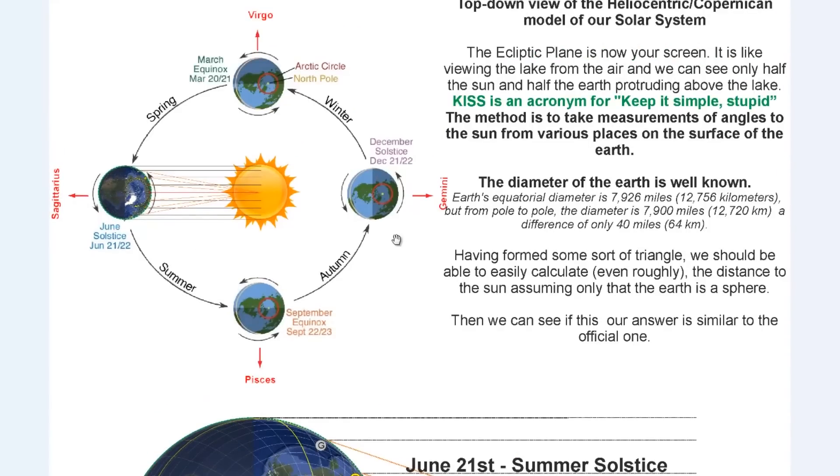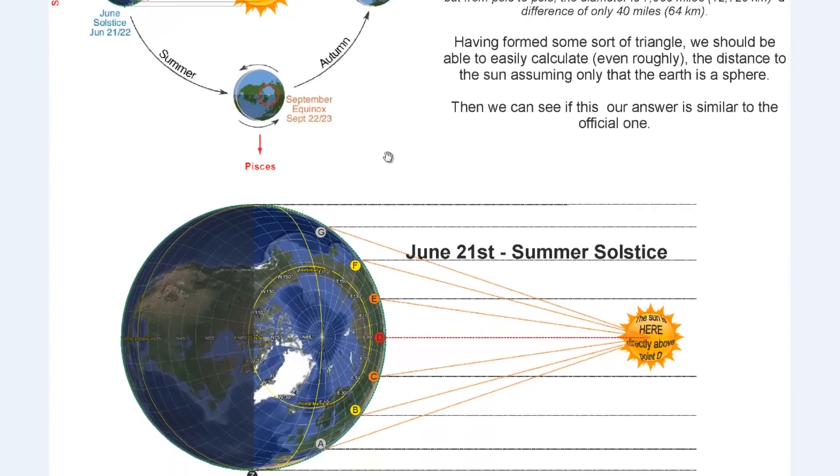This is a top-down view of the heliocentric model of our solar system. The ecliptic plane is now your screen. It's like viewing the lake from the air. And as we can see, only half the Sun and half the Earth are protruding above the lake. Keeping it simple, the method is to take measurements of angles to the Sun from various places on the surface of the Earth, as shown. The diameter of the Earth is well known, so having formed some sort of triangle, we should be able to easily calculate even roughly the distance to the Sun, assuming that the Earth is a sphere. Then we can see if this answer is similar to the official one.